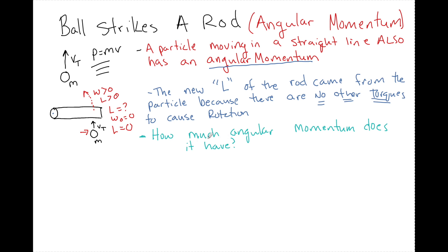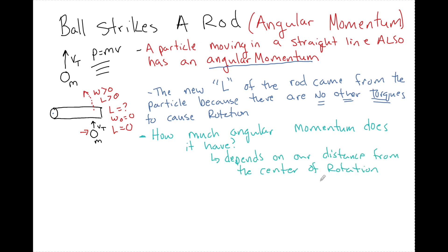Our next question is: how much angular momentum does it have? It depends on how far away from the pivot point we are, or how far we are from the center of rotation. We've seen this happen time and time again where the distance from the center of rotation affects angular motion. For example, linear velocity is rω, linear acceleration is rα, and linear distance is rθ. So we see that r is coming into play in lots of things in rotation, and this is also going to be true here.